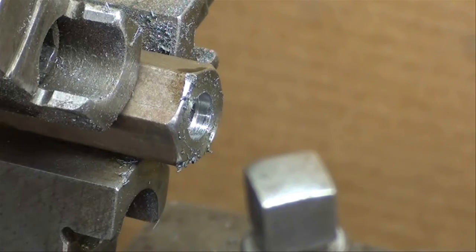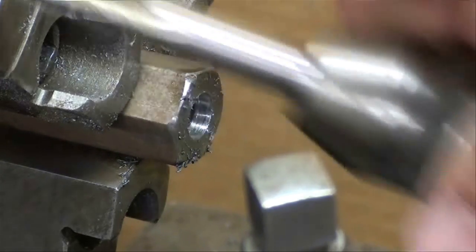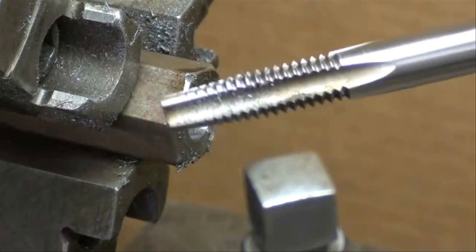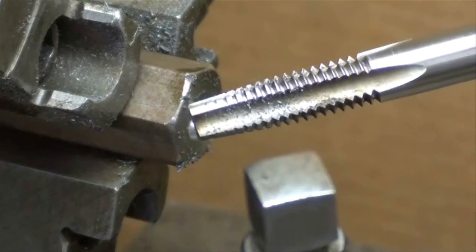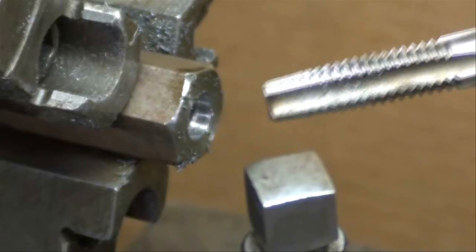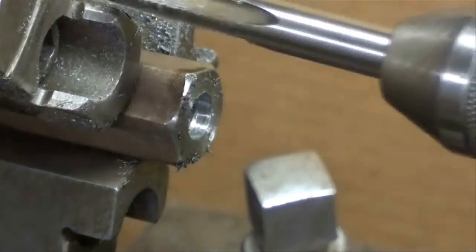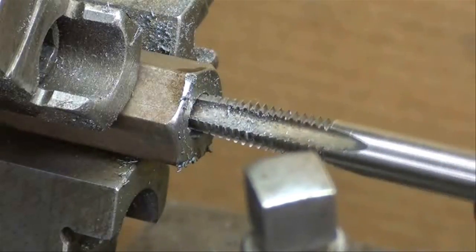So that is now in the tailstock. And I'm using this T-handle type tap wrench today with a tapered tap, that's a 3 1/8-16 tapered tap. So I'll start that in the hole.